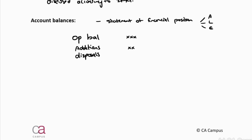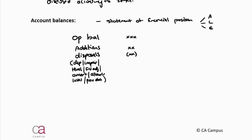You add your additions and remove your disposals, and then because of the accounting framework, account balances generally have a subsequent measurement element to bring the actual year end balance to a fair and reasonable amount. Looking at your assets, you're thinking of depreciation, impairment, revaluations, fair value adjustments, amortization, allowance for credit losses, and obsolete provisions.